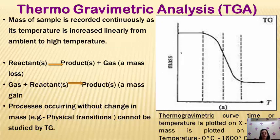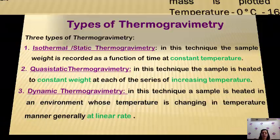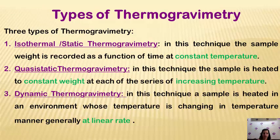The data obtained during the analysis is a thermo-gravimetric curve, where temperature against loss in weight is observed between room temperature to 1600 degrees Celsius. There are three types of thermo-gravimetric analysis. First is isothermal or static gravimetric analysis, where the sample weight is recorded as a function of constant temperature — isothermal means temperature remains constant. Second is quasi-static thermo-gravimetric analysis, where the sample is heated with constant weight and a series of increases in temperature.